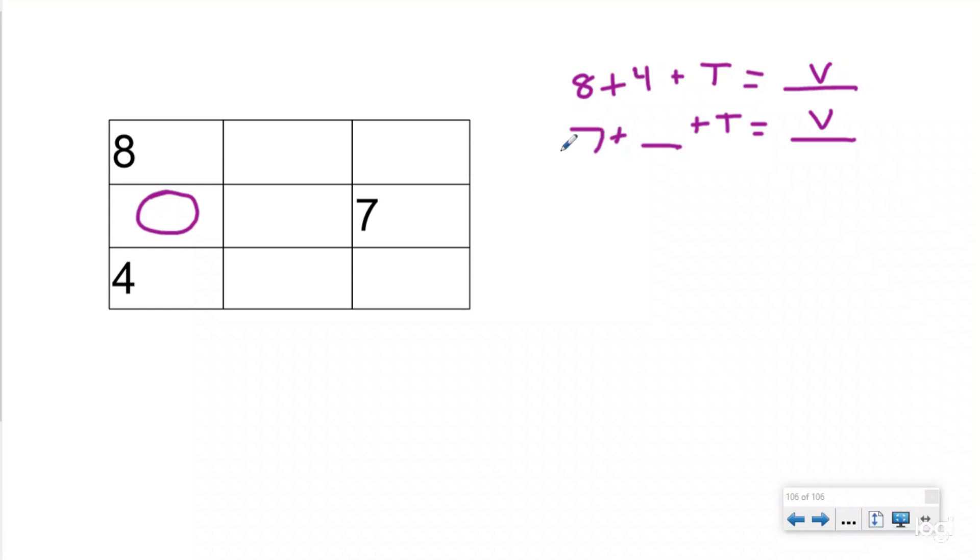That means seven plus another number also have to be 12. Because if I'm adding the same number here and I'm getting the same sum, these first two numbers have to be equal to seven plus whatever number this is. So if eight plus four is 12, that makes this number five.